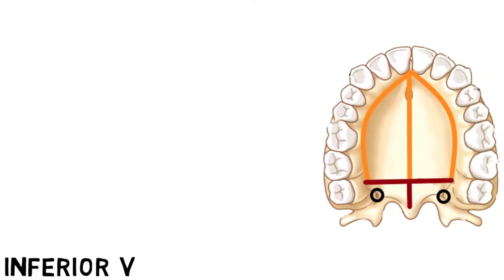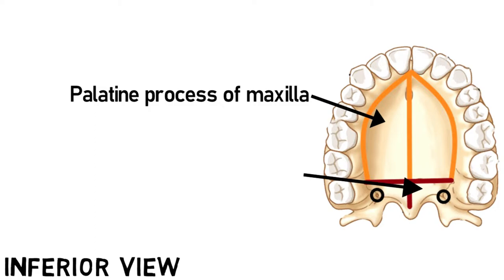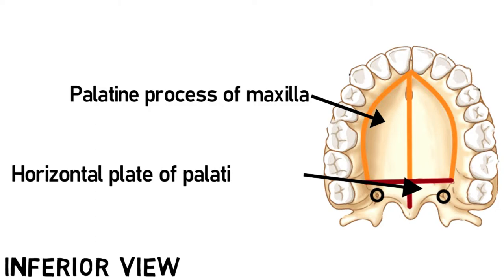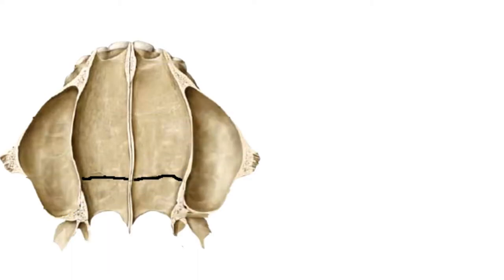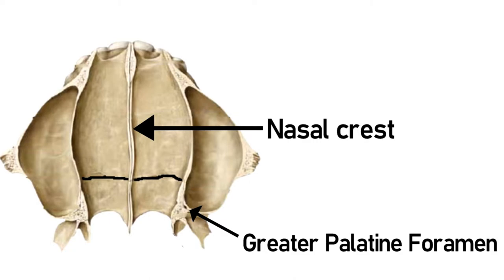This process outlined in orange is the palatine process of the maxilla, and it unites with the horizontal plate of the palatine bone to form the bony palate. The medial border of the horizontal plates joins the contralateral bone to form this nasal crest. And this is the greater palatine foramen, through which the palatine nerves and vessels leave the greater palatine canal.